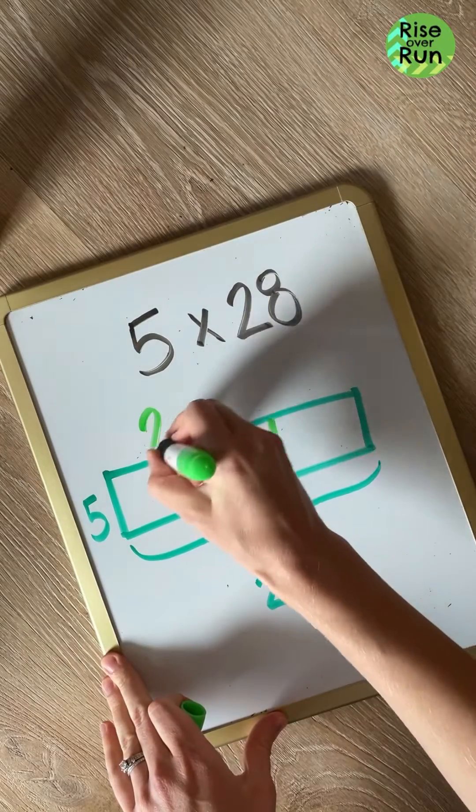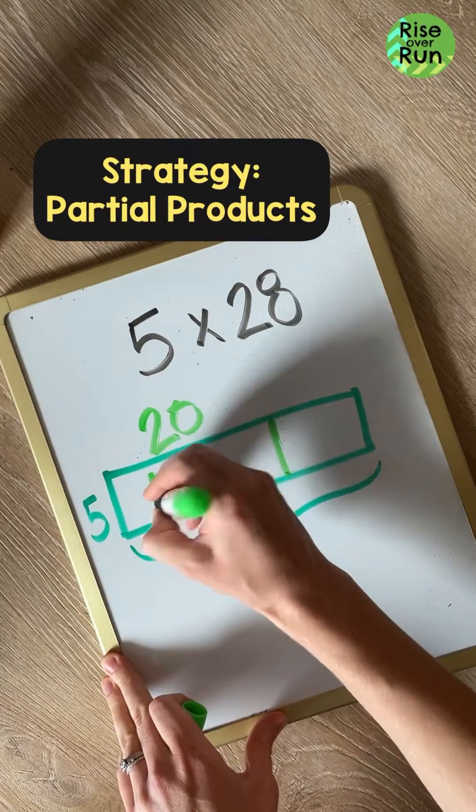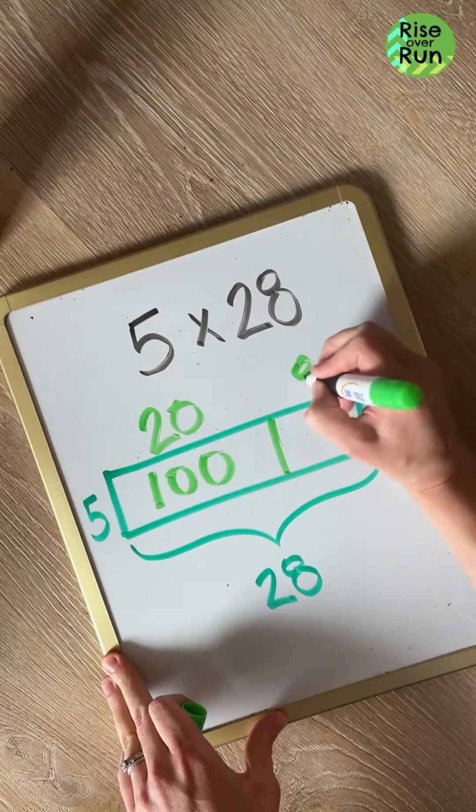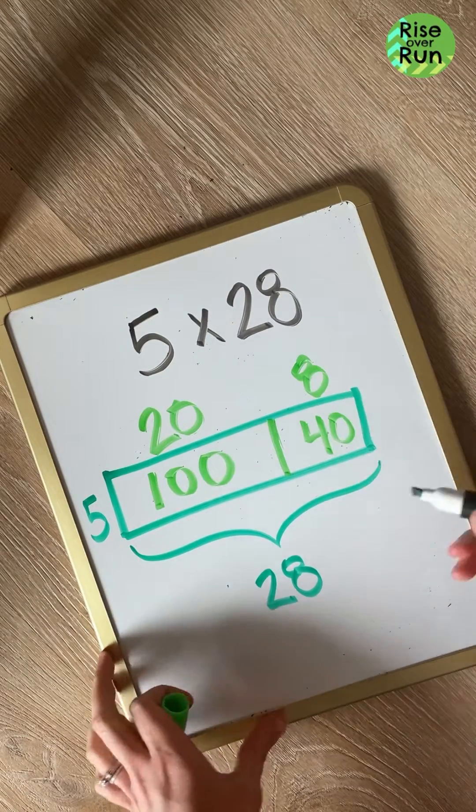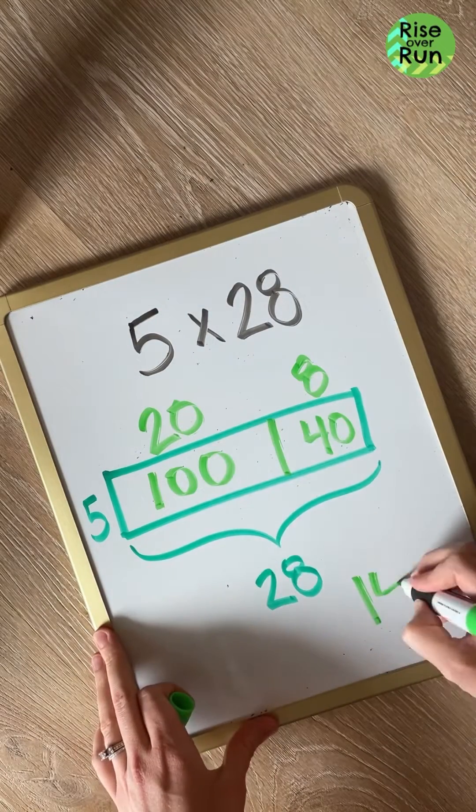Using a strategy called partial products, I'm going to split this area into smaller chunks. I know 5 times 20 is 100 and I know 5 times 8 is 40. To find my total area, I'll add these two numbers together.